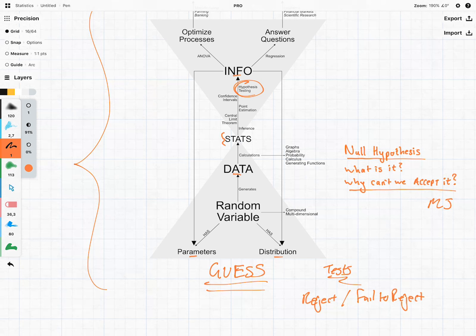So this brings us to the second part of the question. If we know that the null hypothesis is a guess that kick-starts an investigation, we now need to ask why can't we accept it? Why do we use this language of reject and fail to reject?